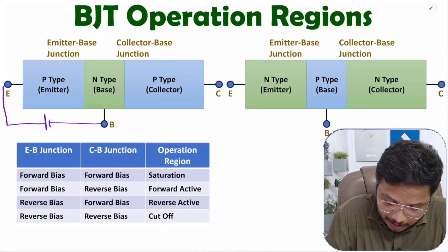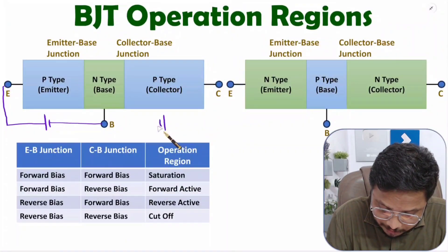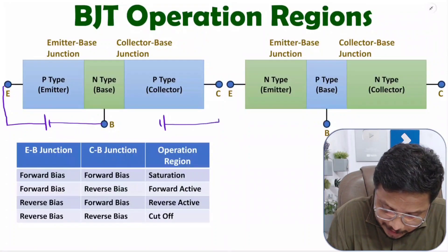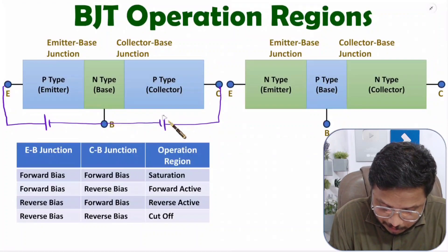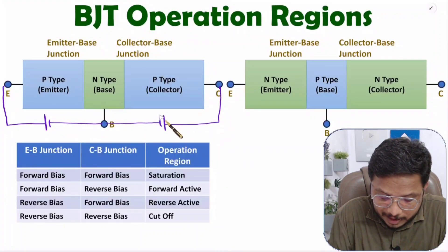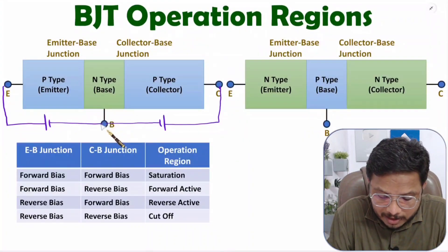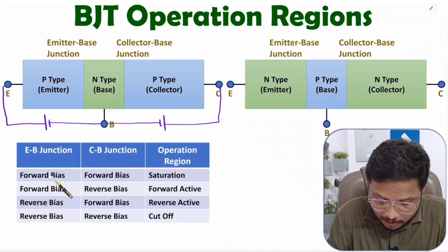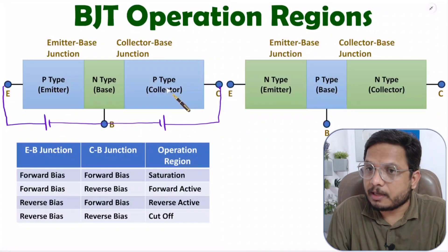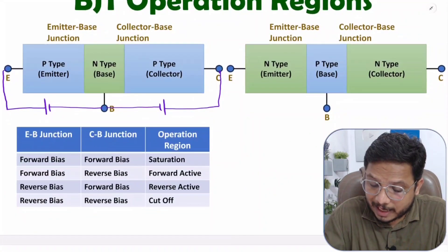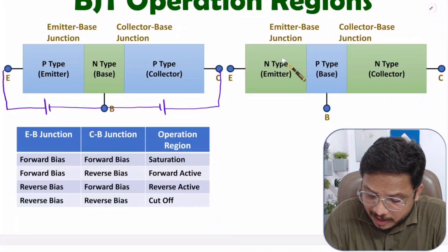To keep the collector-base junction in forward bias, this P-type is connected with the positive terminal of the battery and this N-type, which is the base, is connected with the negative terminal. With these two batteries, you can observe that the emitter-base and collector-base junctions are both in forward bias with common base configuration — and that is how this PNP BJT is in saturation region.